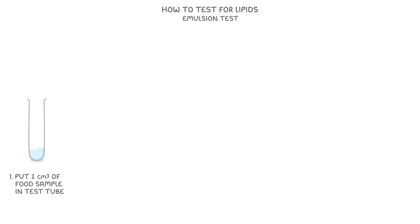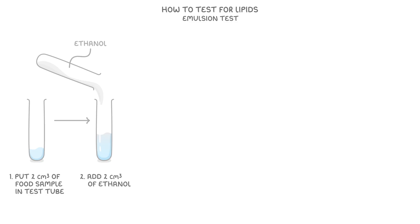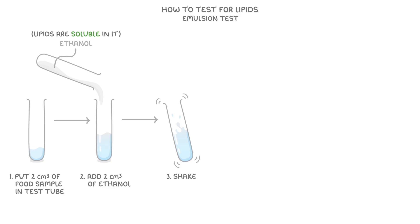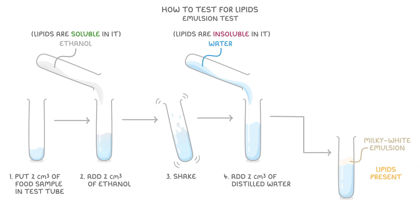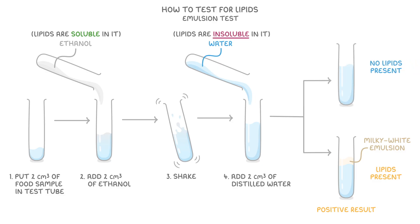Finally, let's learn how to test for lipids in a food sample using the emulsion test. First, we put 2cm³ of our food sample in a test tube and then add 2cm³ of ethanol — a clear alcohol — because lipids are soluble in it. Next, we give it a good shake to dissolve any lipids present, then add 2cm³ of distilled water, because lipids are insoluble in it. If lipids are present, we'll see a milky white emulsion form — this is our positive result. This happens because lipids are insoluble in water, so the lipid-ethanol solution separates and forms tiny droplets that scatter light suspended in the water, creating that milky appearance. If no lipids are present, the solution will stay clear and the emulsion won't form — this is our negative result.